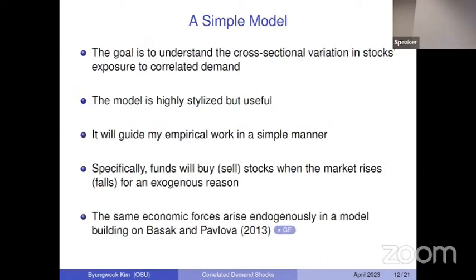To answer this question, I develop a simple model with the goal of understanding cross-sectional variation in exposure to correlated demand shocks. I develop a stylized model that will be very useful because it will guide my empirical work in a simple manner. In the model, funds will buy when the stock market is rising and do the opposite when it has fallen. I also show in the paper that the same economic forces can arise endogenously due to benchmarking, building on a more realistic model based on Basak and Pablo 2013, though that model is empirically less tractable.